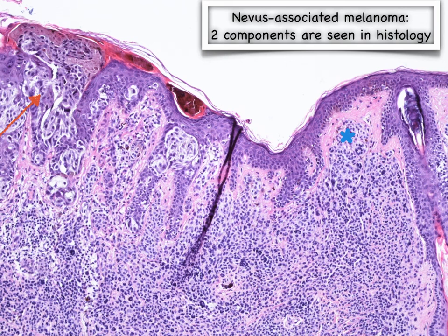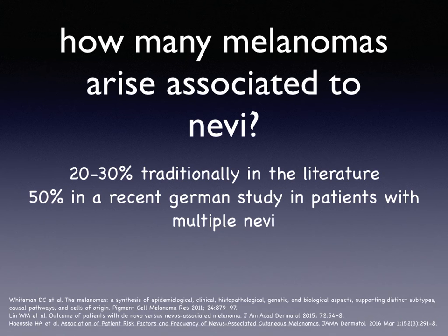Like in this case, where the blue asterisks indicate the benign nevus component, while the red arrows are pointing to the pagetoid spread of atypical melanocytes in the melanoma component in this nevus-associated melanoma.